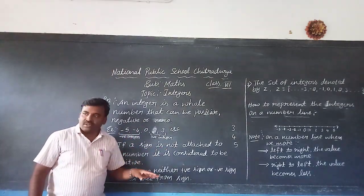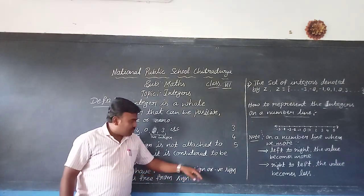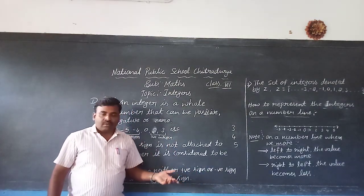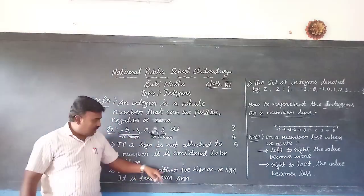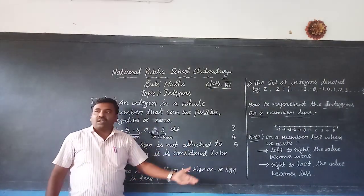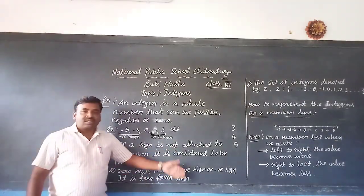And second one is the zero has neither positive sign nor negative sign. Because zero does not have any value. That's why zero does not have neither positive sign nor negative sign. That's why it is called free from sign. Zero is free from sign.